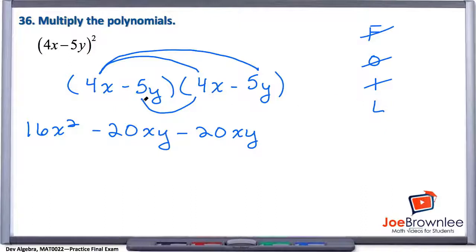And lastly, the L, last to the last, minus 5y times minus 5y gives us a positive 25y squared.